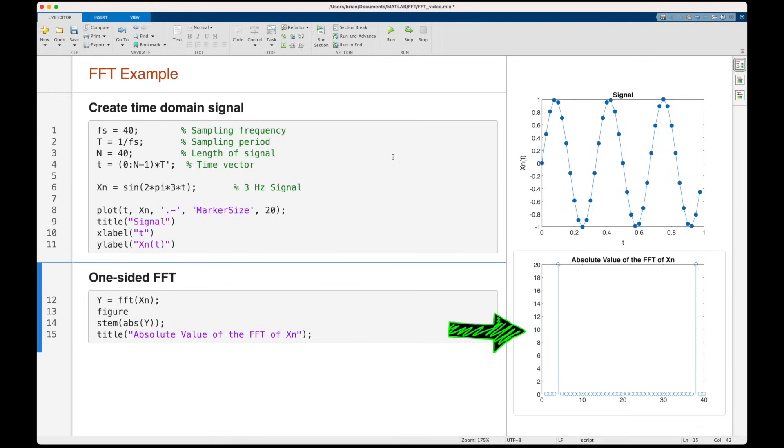Now to get the one-sided FFT, we just look at half of this spectrum. But of course, since I have an even number of time samples, we need that plus one in there so that we can capture the Nyquist frequency as well. So far, so good.